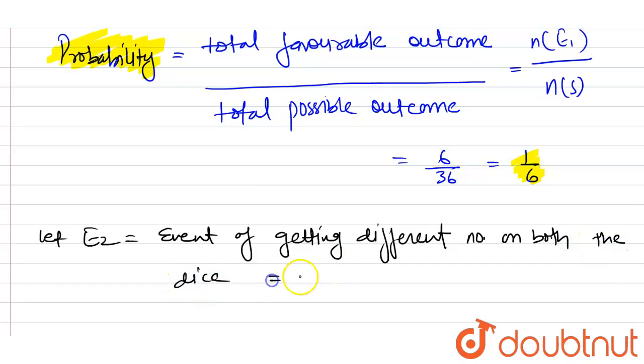Now, this equals 36 minus 6 because 36 is the total number of outcomes and 6 is the event for getting same numbers on both dice. So this equals 30. So our n(E2) equals 30.